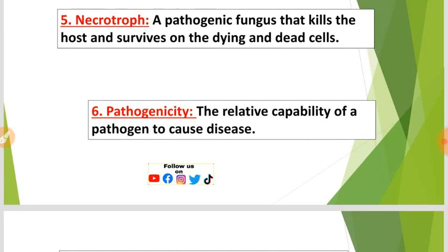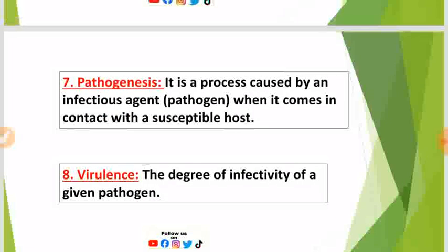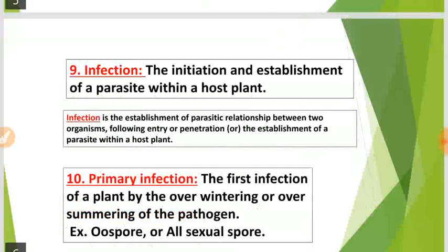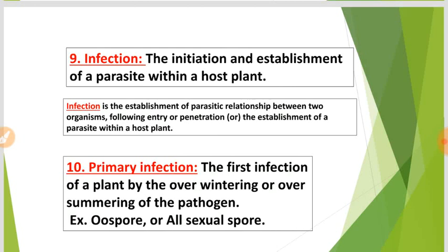Number six: Pathogenicity — the relative capability of a pathogen to cause disease. Number seven: Pathogenesis — the process caused by an infectious agent like a pathogen when it comes in contact with a susceptible host. Number eight: Virulence — the degree of infectivity of a given pathogen.